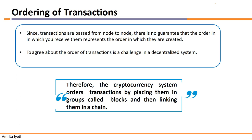This is a very important concept in the blockchain network: ordering of transactions. Since transactions are passed from node to node, peer to peer, there is no guarantee that the order in which you receive them represents the order in which they were created. As a node, I could receive information about many transactions — thousands of transactions are generated every second — so you can never justify which transaction happened first. Basically, ordering of transactions is a challenge in this decentralized blockchain network.